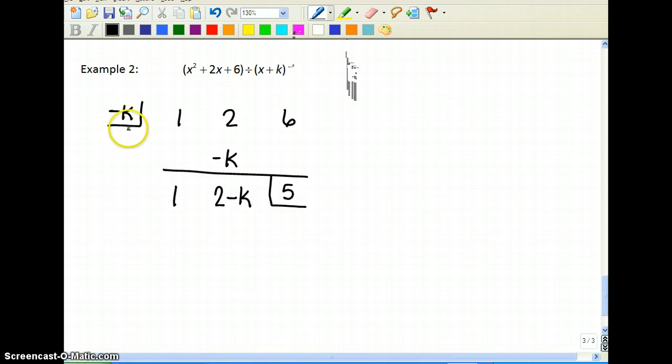Now we multiply. Negative k times 2 is negative 2k. And negative k times negative k is plus k squared. So you're just distributing that.